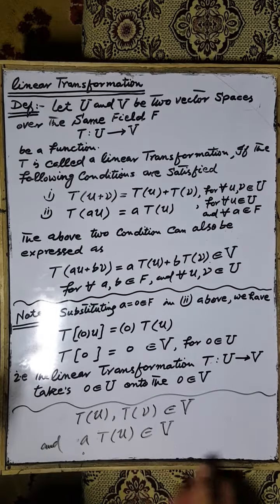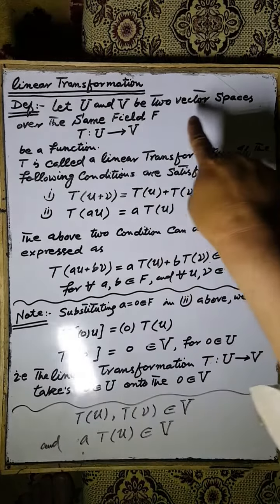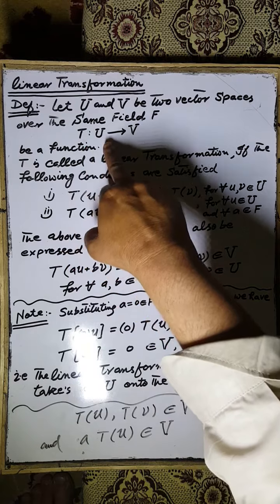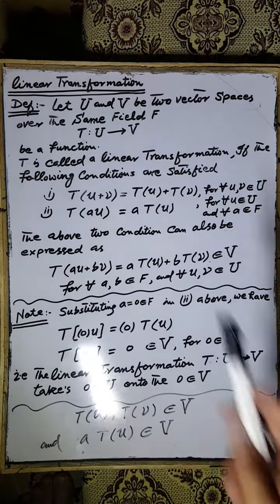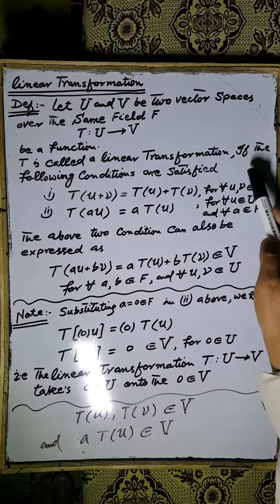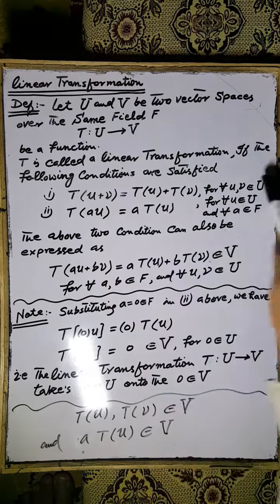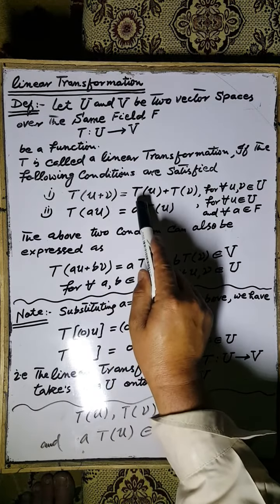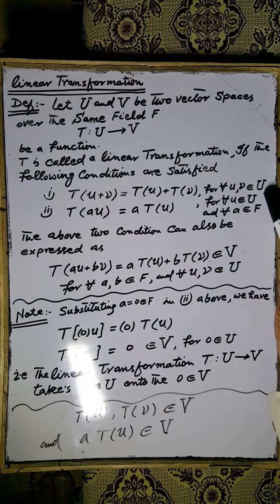Bismillahirrahmanirrahim. Our next topic is linear transformation. Let U and V be two vector spaces over the same field F. A mapping T from vector space U to vector space V is called a linear transformation if it satisfies the following condition: T(u + v) is equal to Tu plus Tv, for u, v elements of the vector space U.